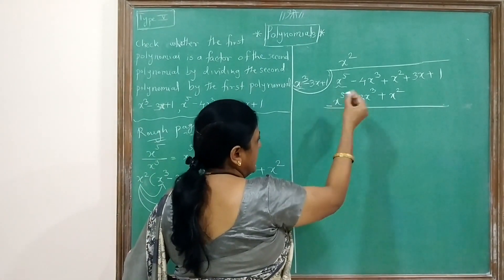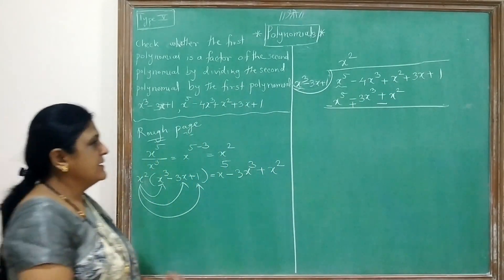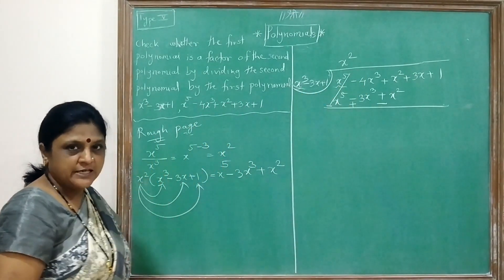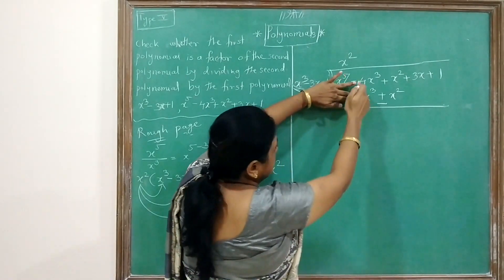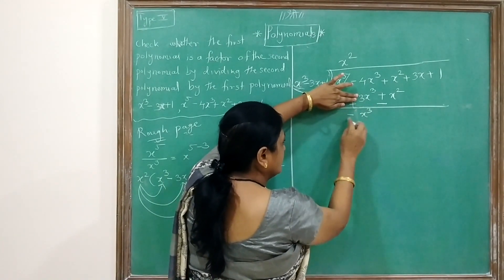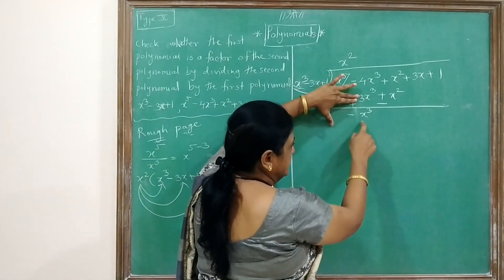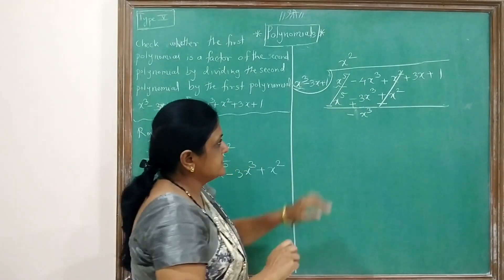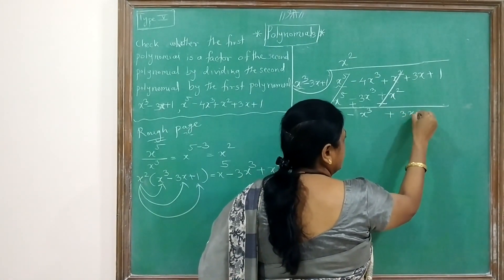This plus sign is converted into minus, minus into plus, and plus into minus. Then x⁵ - x⁵ cancels. Then -4 plus 3 gives -x³. Plus x² minus x² cancels. And the remaining terms come down: +3x + 1.